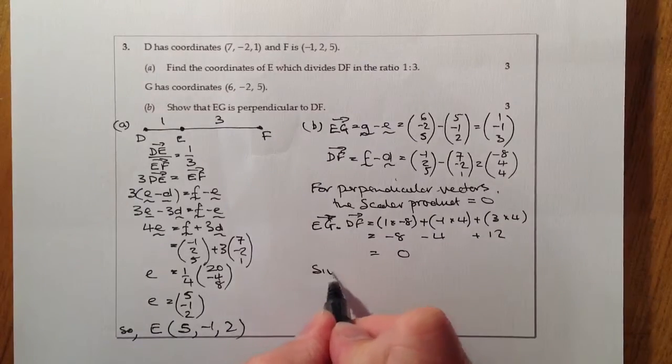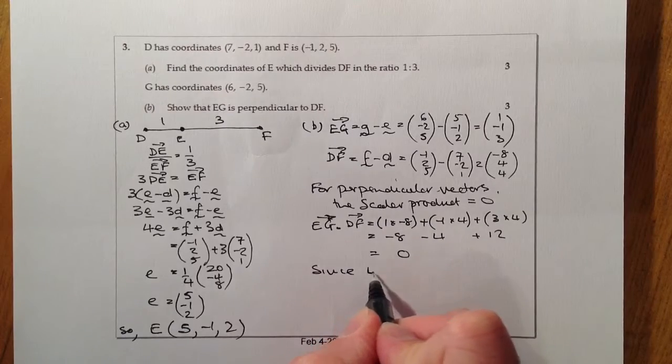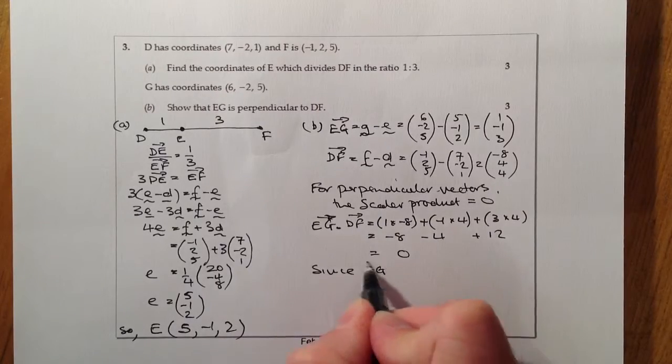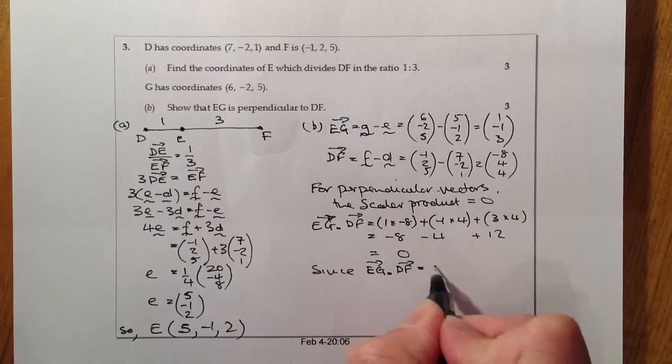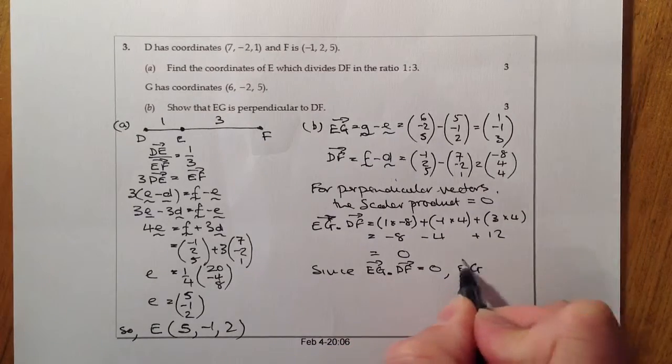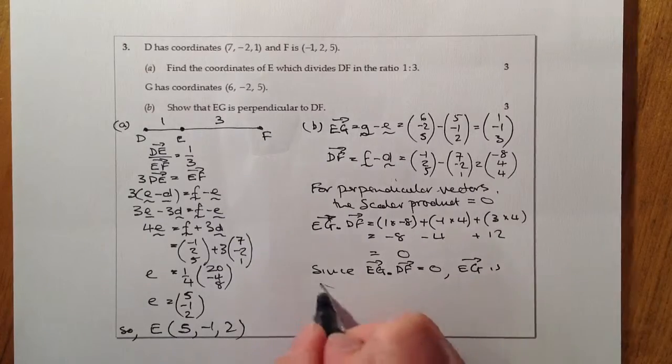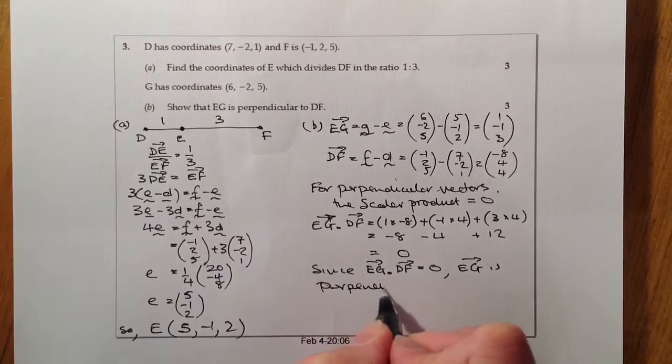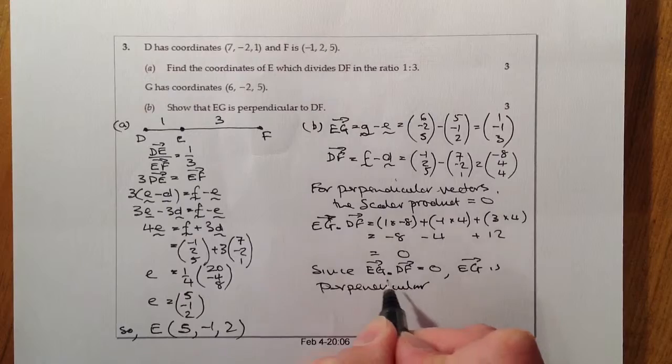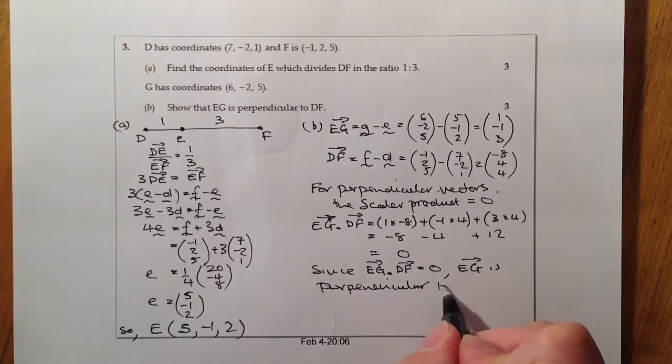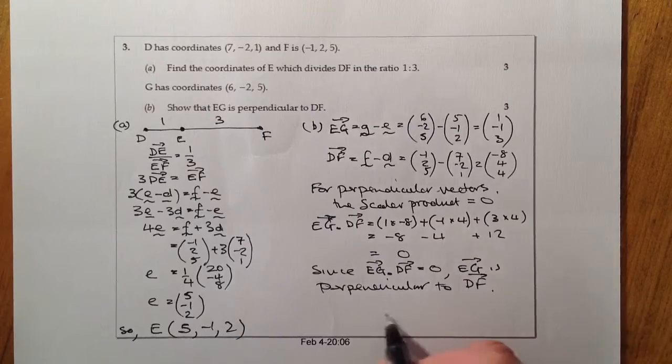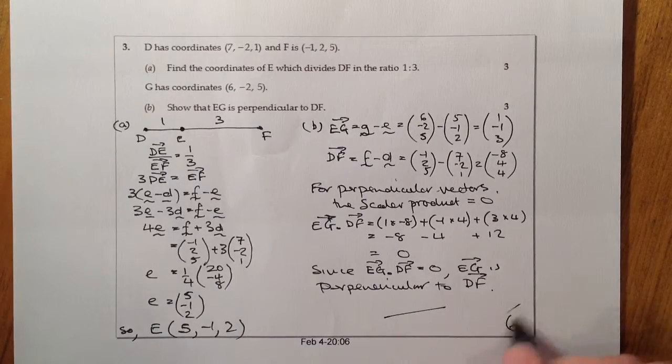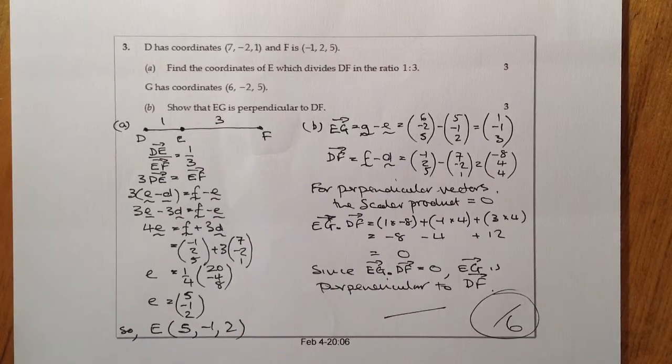Since EG dot DF equals zero, EG is perpendicular to DF. That's going to be six marks total.